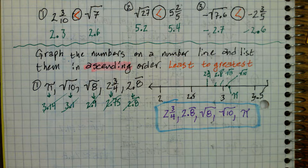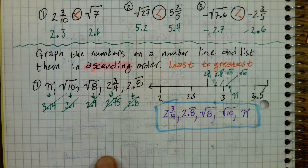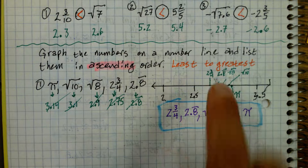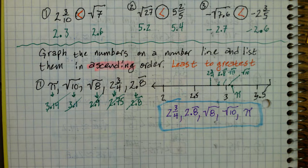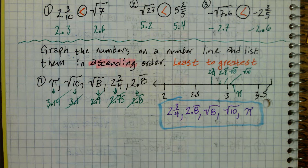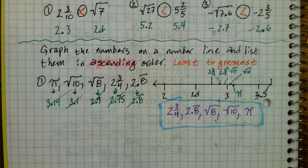They asked us to do two things: graph the numbers on the number line — we did that — and list them in ascending order — we did that. Expect both of those things to happen on the test. We have one more, then we're done.